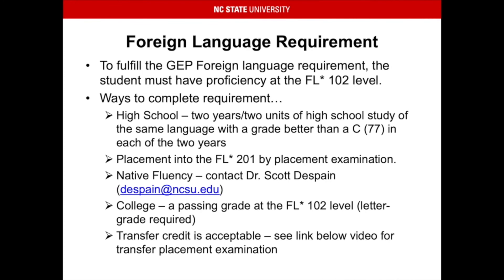Finally, you have your foreign language requirement. To fulfill the GEP foreign language requirement, the student must have proficiency at the FL Star 102 level. The ways to complete this requirement are: via high school by doing two years or two units of high school study of the same language with a grade better than a C or a 77 in each of the two years; placement into FL Star 201 by placement examination; by native fluency, for which you must contact Dr. Scott Despain at his email address listed; via college courses, in which you must receive a passing grade at the FL Star 102 level — a letter grade is required so you cannot take it pass-fail; and finally, transfer credit is acceptable. See the link below the video for the transfer placement examination.